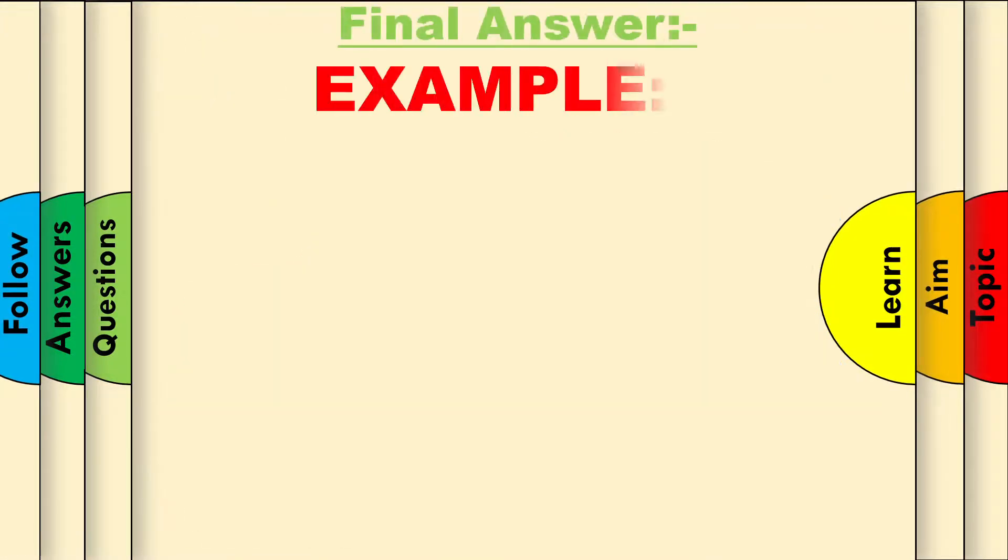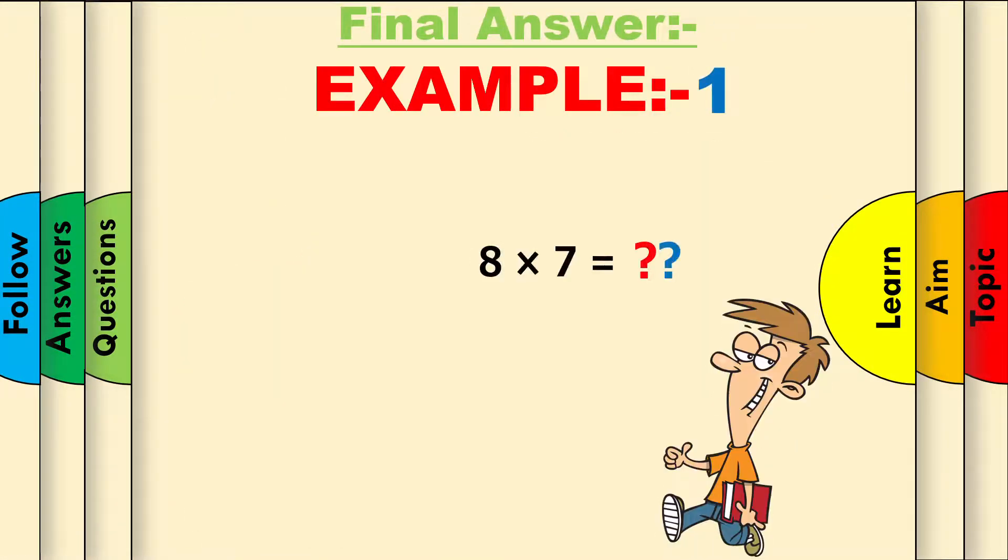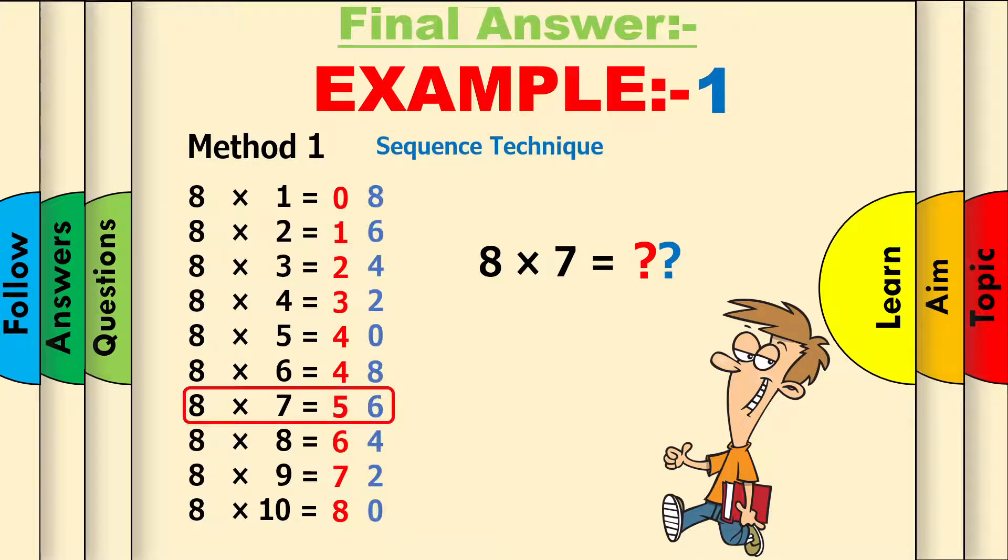The final answer for example 1. 8 times 7 equals what? Let's use method 1, the sequence technique. 8 times 7 equals 56. So, place this in the answer. It's correct!